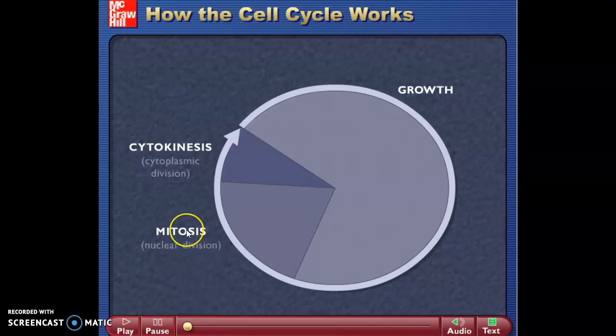So again, this would be for a somatic cell, a body cell, any cell in your body besides a sperm or an egg. It's going to go through the longest period of its life, which is interphase. We said in our first animation it's at least about two-thirds or more of a cell's life, with a third or less of a cell's life being spent in division, either mitosis or cytokinesis.